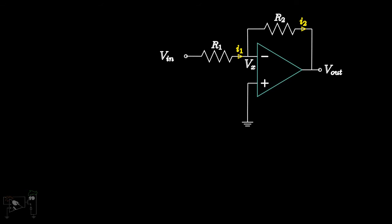The current flowing through R1 is Vn minus Vx upon R1, by Ohm's law. This current is the same as I2, which will be Vx minus Vout upon R2. Equating these two, this is the equation we get.